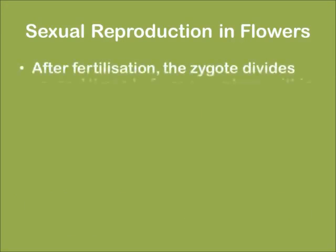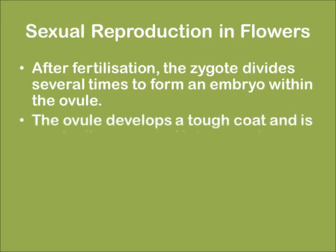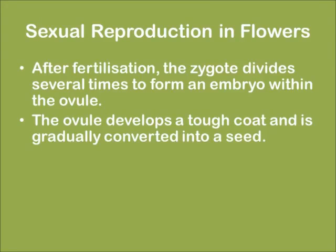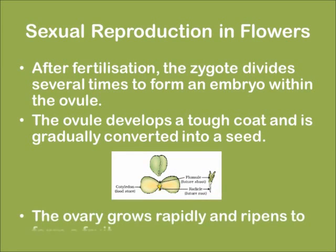After the pollen lands on a suitable stigma, it has to reach the female germ cell, which is in the ovary. After fertilization, the zygote divides several times to form an embryo within the ovary. The ovary develops a tough coat and is gradually converted into a seed. The ovary then grows rapidly and ripens to form a fruit.